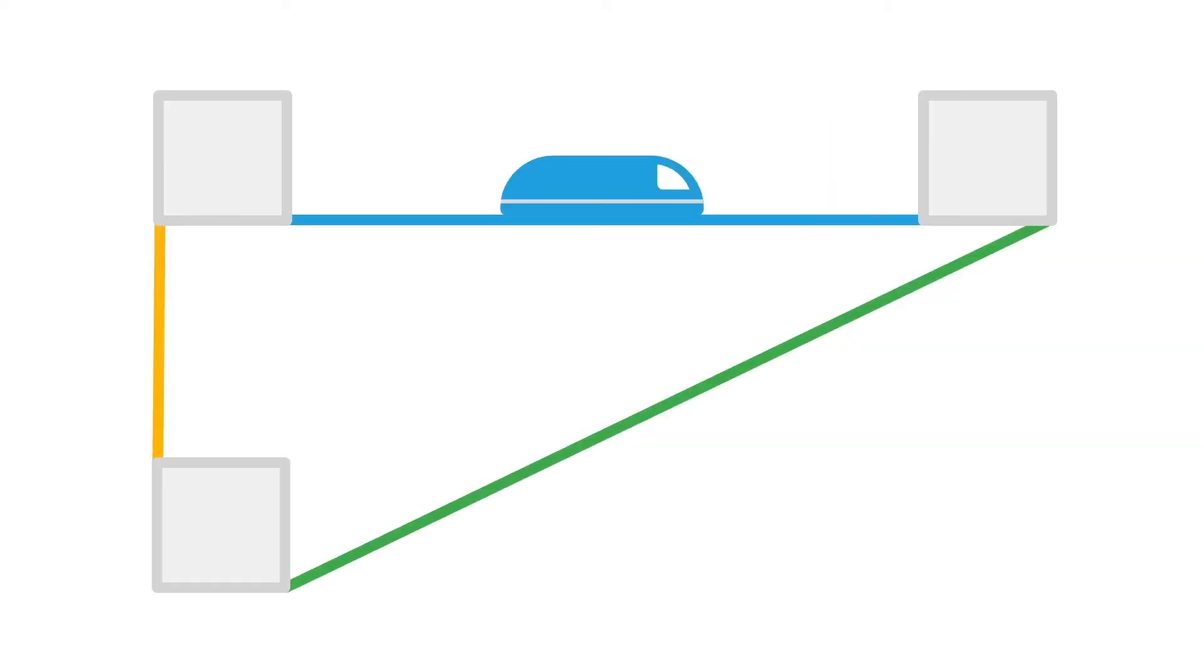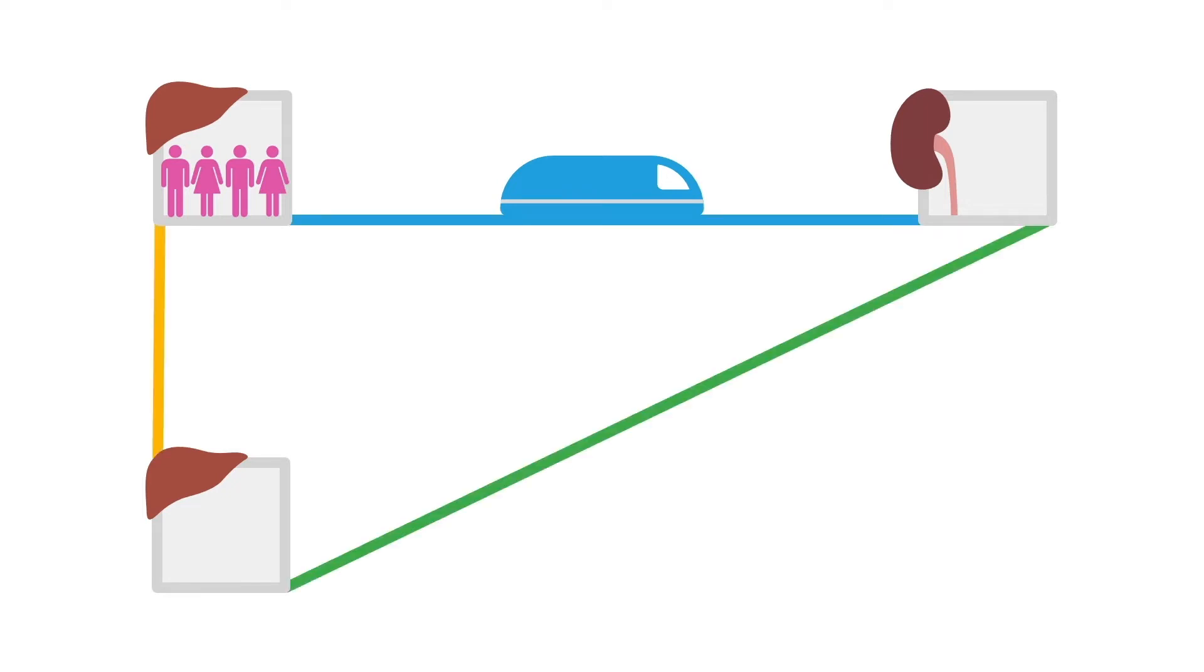Well, think of this process as a mass transit system, like a train. In this analogy, the stations represent the organs, the passengers represent acetaminophen and its byproducts, the train represents the chemical reactions that break the drug down into its byproducts, and the train tracks represent the different routes those byproducts take.